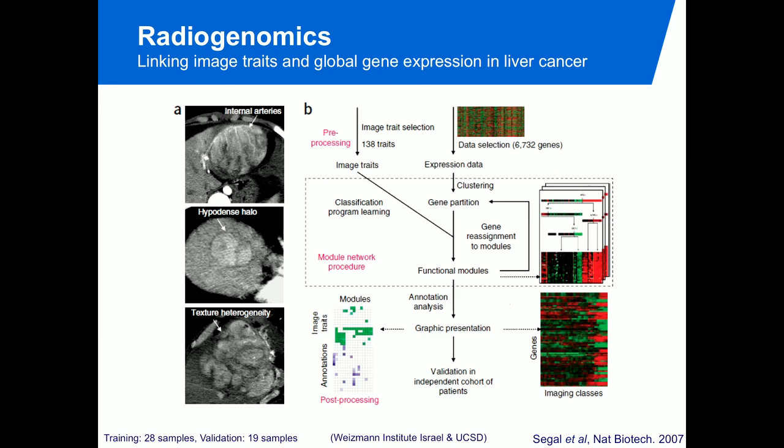They linked the manually-scored traits back to gene expression clusters. Using a limited number of traits — about 25 — they could explain up to 85% of the genetic heterogeneity in the sample. They showed a correlation between imaging data, the phenotype, and the underlying driver biology. It was a small dataset with only 28 samples for training and 19 for validation — very underpowered — but they really demonstrated this association for the first time.